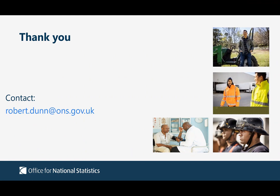A further question asks whether things like health interventions — for example, corrective eye surgery such as LASIK to enable someone to pursue a specific career — would be excluded from the framework. Robert responds that such interventions could potentially be seen as part of the cost to enable someone to follow their chosen career, but that identifying such items within the current national accounts lacks the necessary granularity. In an ideal world, those types of cost items could be a feature.